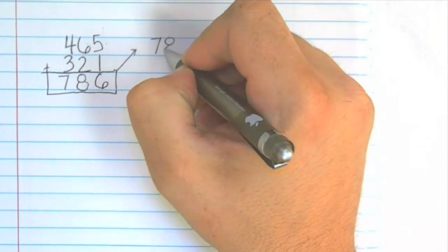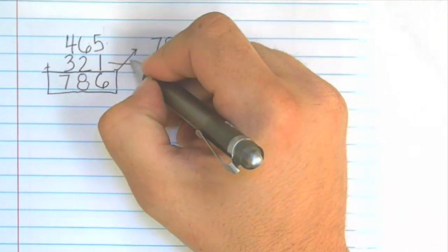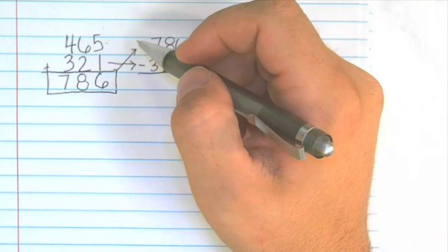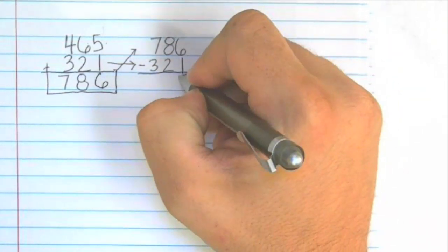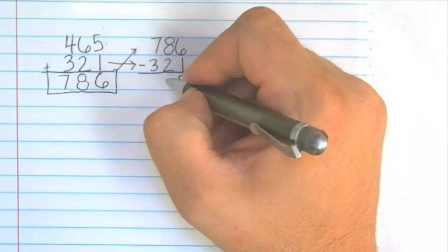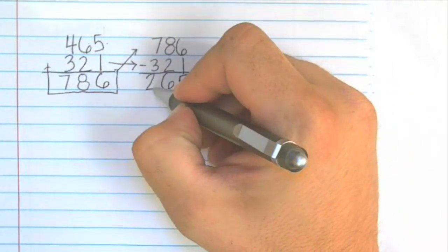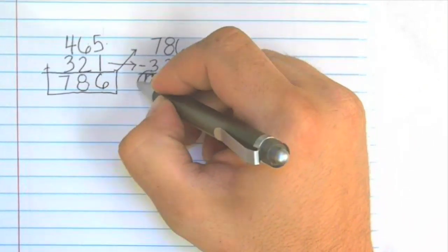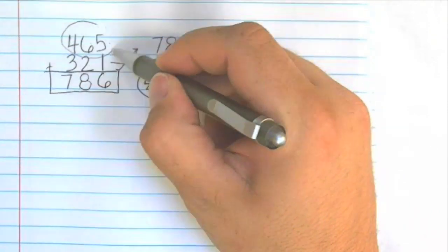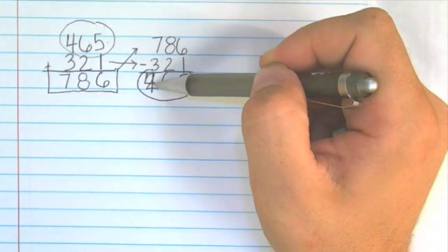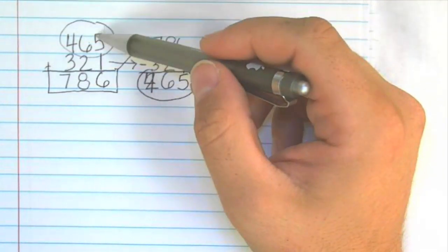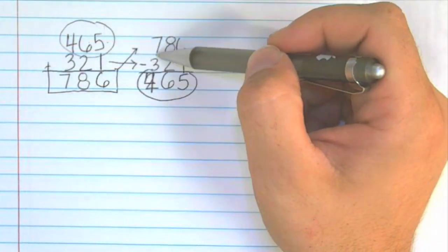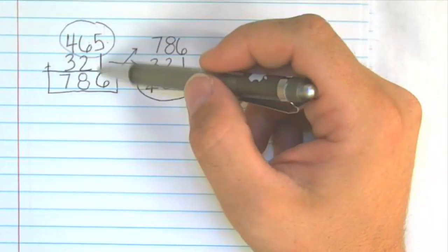786, we're going to subtract 321. And if we get this answer correct, we should get 465. So six minus one is five, eight minus two is six, and seven minus three is four. We have 465 and that matches this 465. Now if you make a mistake like this and you put 265 like I did, you can check up here and say oh it should be 465 so let me recheck and then you can just double check your subtraction, make sure that's correct and double check your addition to make sure that's correct.